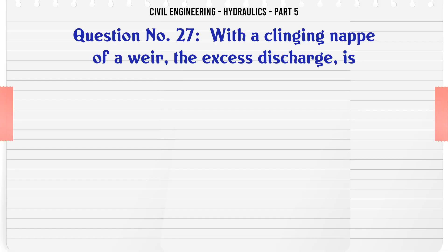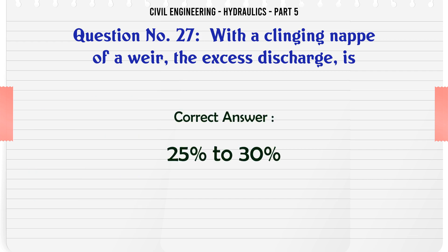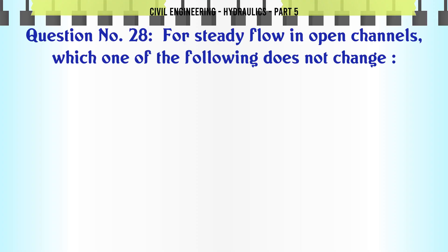With a clinging nappe over a weir, the excess discharge is: A. 6 to 7%, B. 8 to 10%, C. 18 to 20%, D. 25 to 30%. The correct answer is 25 to 30%.